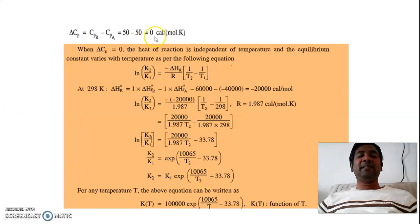Now delta C_P is 0. Both C_P values are same for A and R. When delta C_P is 0, so we will use this equation: ln(K2/K1) is equal to minus delta H_R upon R into (1/T2 minus 1/T1).